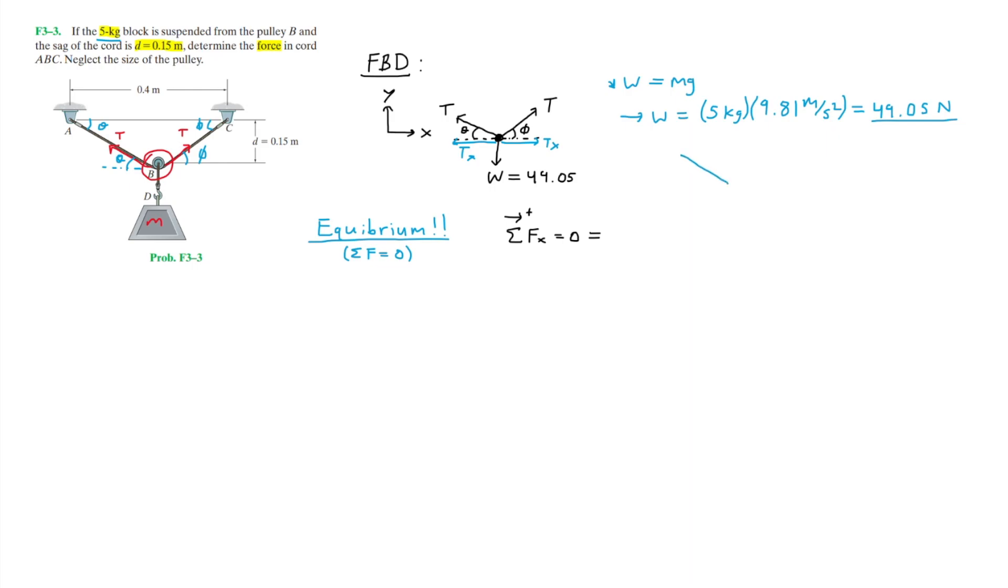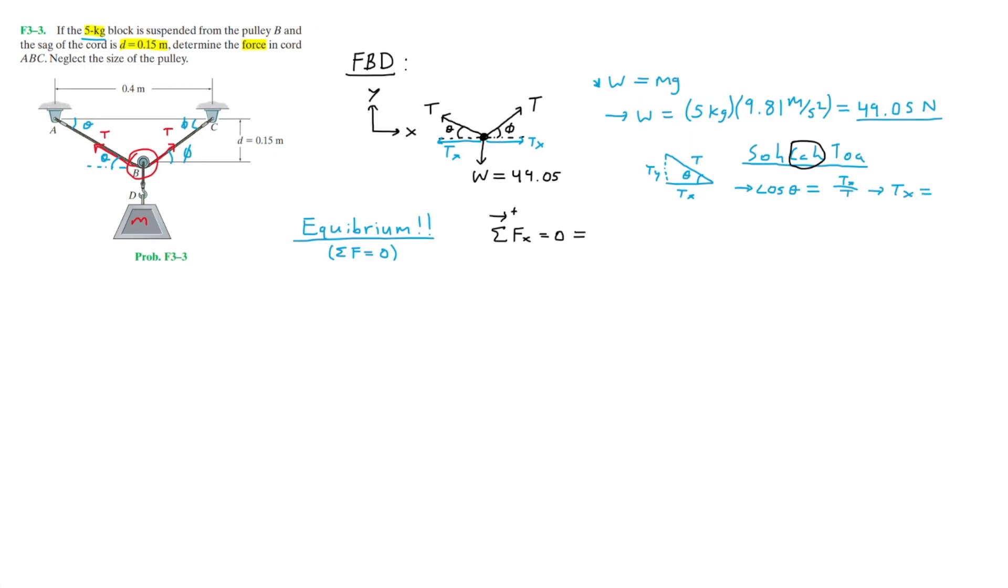I'm drawing the right triangle that is formed from this force. Right now we're trying to find Tx. To find Tx, we can use trigonometry. Since Tx is adjacent to theta, we should use cosine. Hence, we have cosine theta equals Tx divided by T. Isolating Tx, we have Tx equals T times cosine theta. We can do the same for the tensile force on the right, which gives us the same expression, Tx equals T cosine phi.